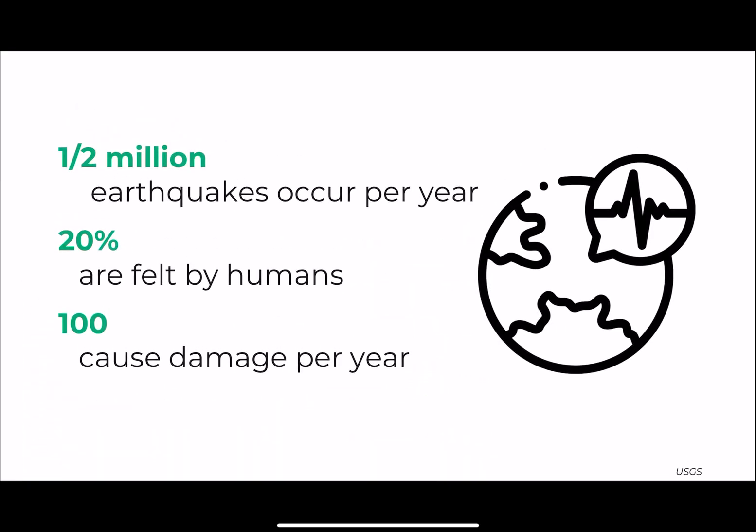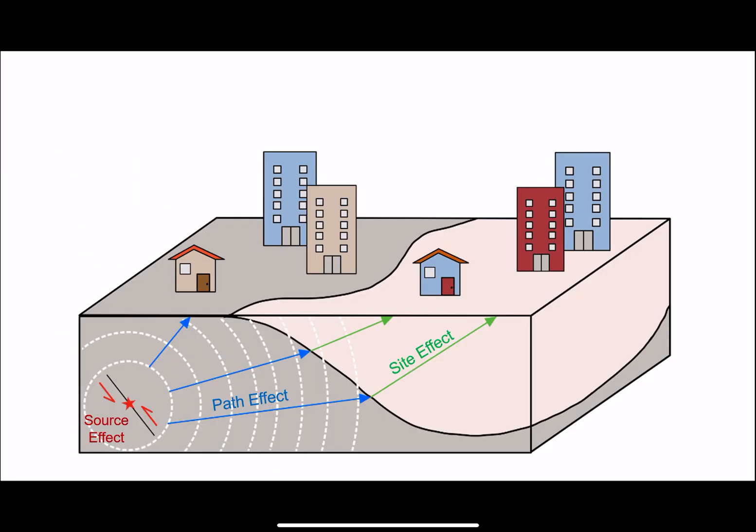Around half a million earthquakes occur per year, but only around 20 percent are felt by humans and about 100 cause damage per year. There are three main types of effects that earthquake engineers and seismologists focus on: source, path, and site effects.